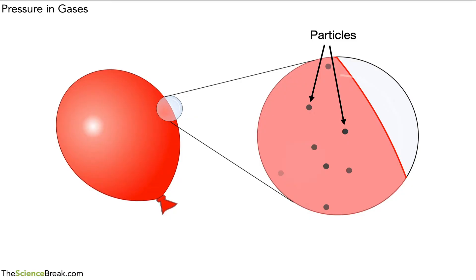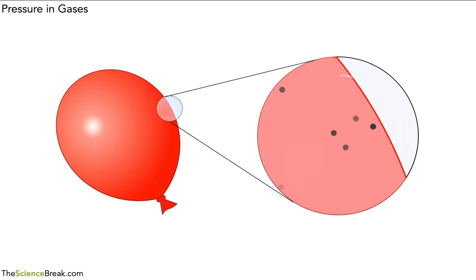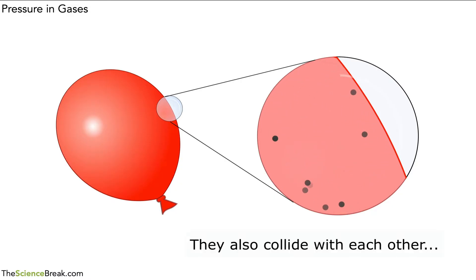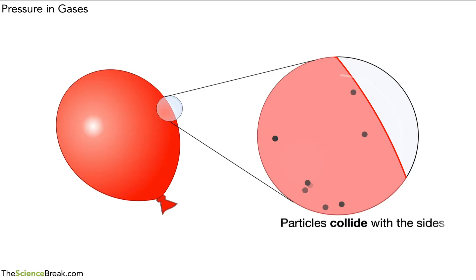The particles are either atoms or molecules, but we'll call them particles. They are very far apart from each other, they move in random directions and at different speeds compared to each other, and they also collide with the sides of the balloon — by collide, we mean they bash into the sides. We can see the particles moving around inside the balloon: random directions, far apart, and colliding with the inside surface. The particles collide with a force, and that's what causes the pressure — gas pressure inside the balloon.